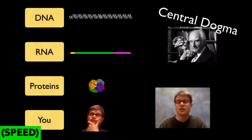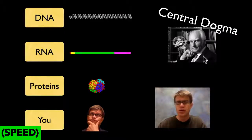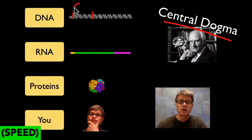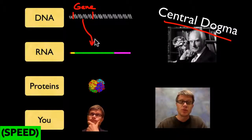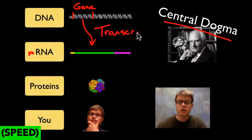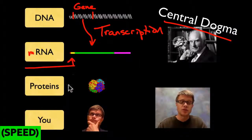This process is called the central dogma. The central dogma was developed by Francis Crick. After Watson and Crick came up with the structure of DNA, he spent years working out how this actually works. Basically, we take the DNA — it has sections called genes, and a gene codes for a specific protein. We copy down that gene into messenger RNA, and that process is called transcription. Transcription takes place in the nucleus; everything down in the cytoplasm comes later.